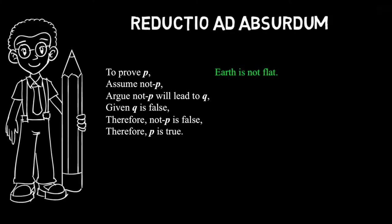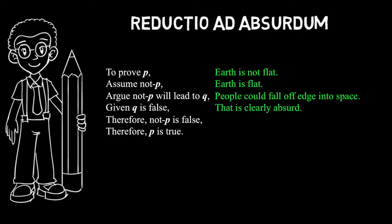Let's take a look at an example. If we are to argue earth isn't flat, we can assume the opposite, which is earth is flat. And if earth is flat, then people could fall off or jump off the edge into deep space, which is clearly absurd. Therefore, earth is flat is false. Hence, earth isn't flat.